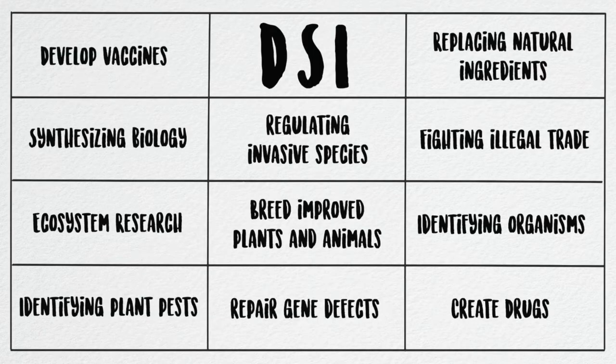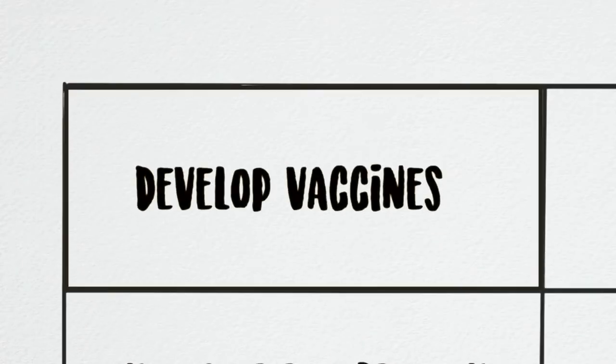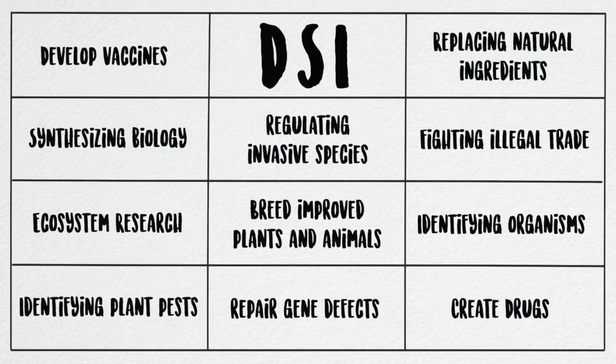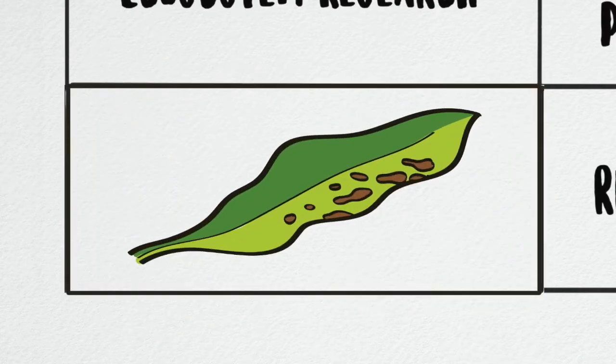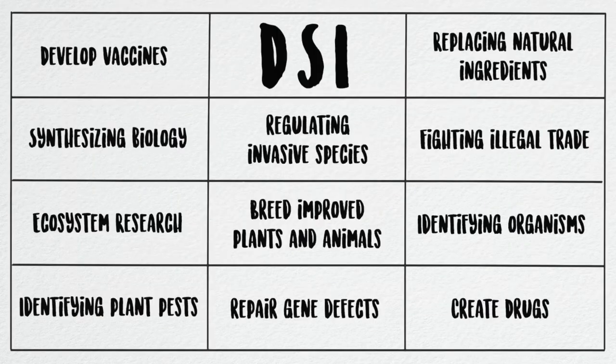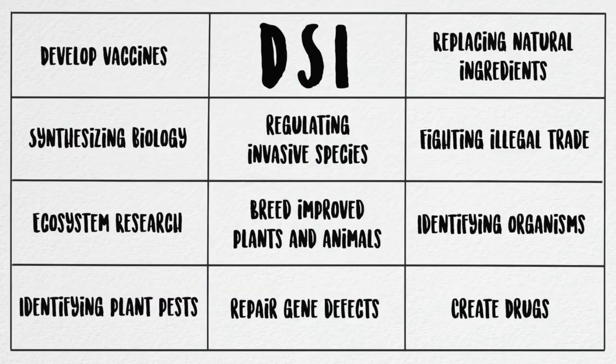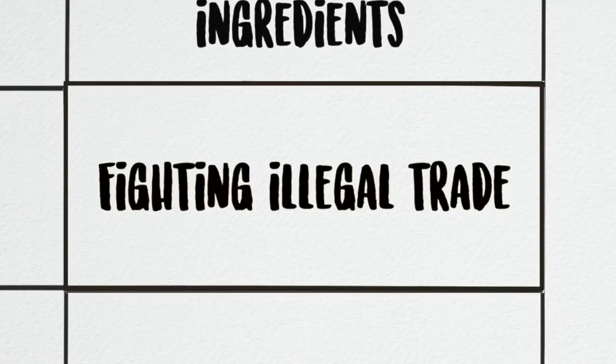The use of DSI offers a wide range of new possibilities, such as finding better cures for diseases, identifying microorganisms that harm plants, adapting crops for climate change, and protecting endangered species.